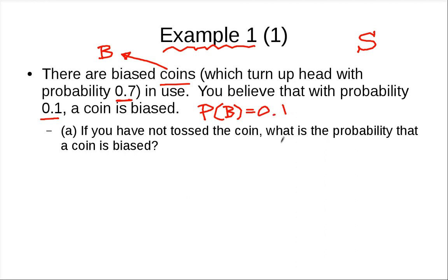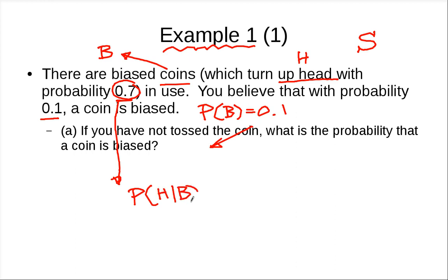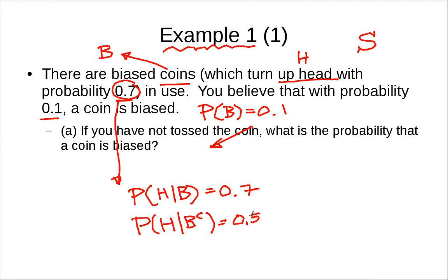We define event H as getting a head when tossing the coin. So P(H|B) = 0.7 — given a biased coin, you get heads with probability 0.7. And P(H|B-complement) = 0.5 — for the fair coin. Note these don't have to sum to one; they are not complements of each other. Now, if you toss the coin once and get a head, what's the probability the coin is biased?